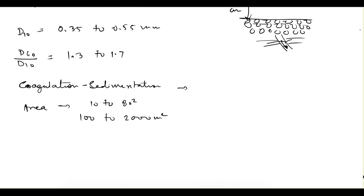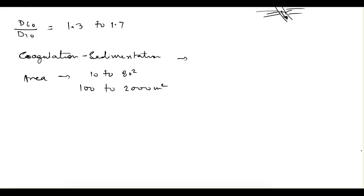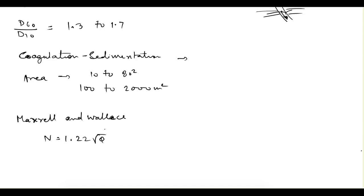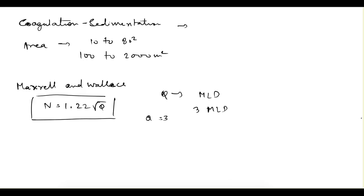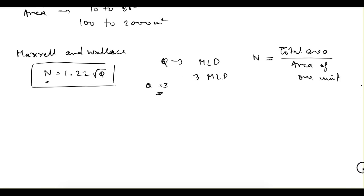The space requirement for slow sand filter is much higher. There is one equation used to find the number of filters, given by Morrell and Wallace: n is equal to 1.22 times the square root of Q, where n is the number of filter units and Q is the flow in million liters per day. For example, if the flow is 3 MLD, then Q equals 3. However, if total area and area of one unit are given, you can simply find n by dividing total area by area of one unit.